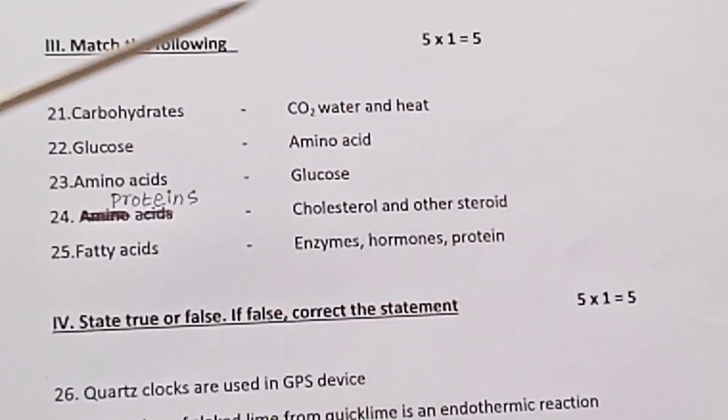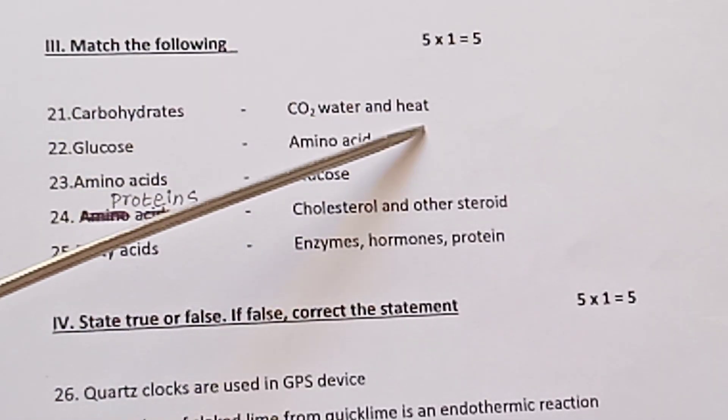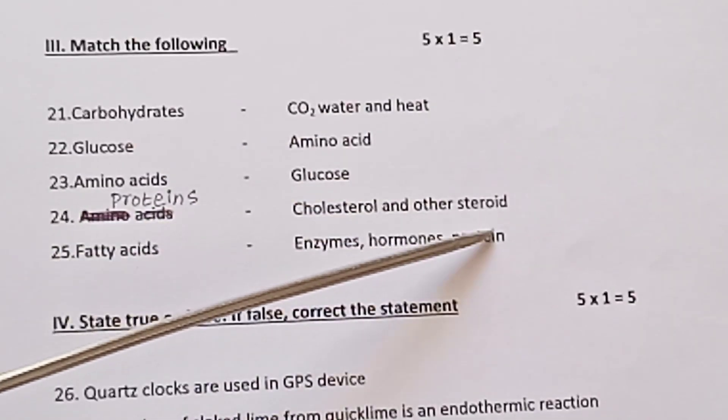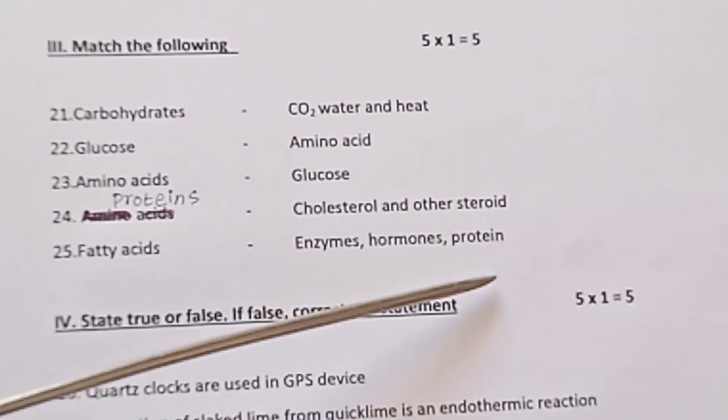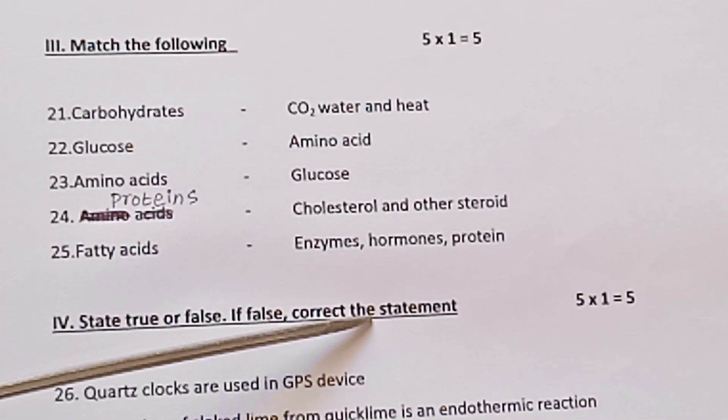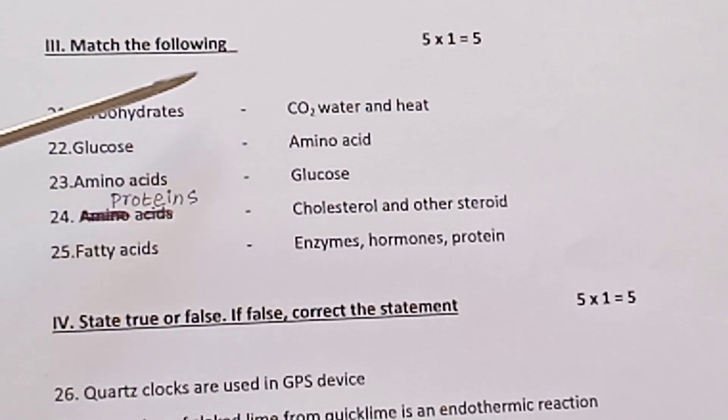Match the following, five into one is equal to five. Carbohydrate, glucose, amino acid, proteins, fatty acids. Right side answer: carbon dioxide water and heat, amino acid, glucose, cholesterol and other sterols, enzyme, hormone, protein. Left hand side of the question, right hand side of the question, which is correct? The answer is the opposite of the question.